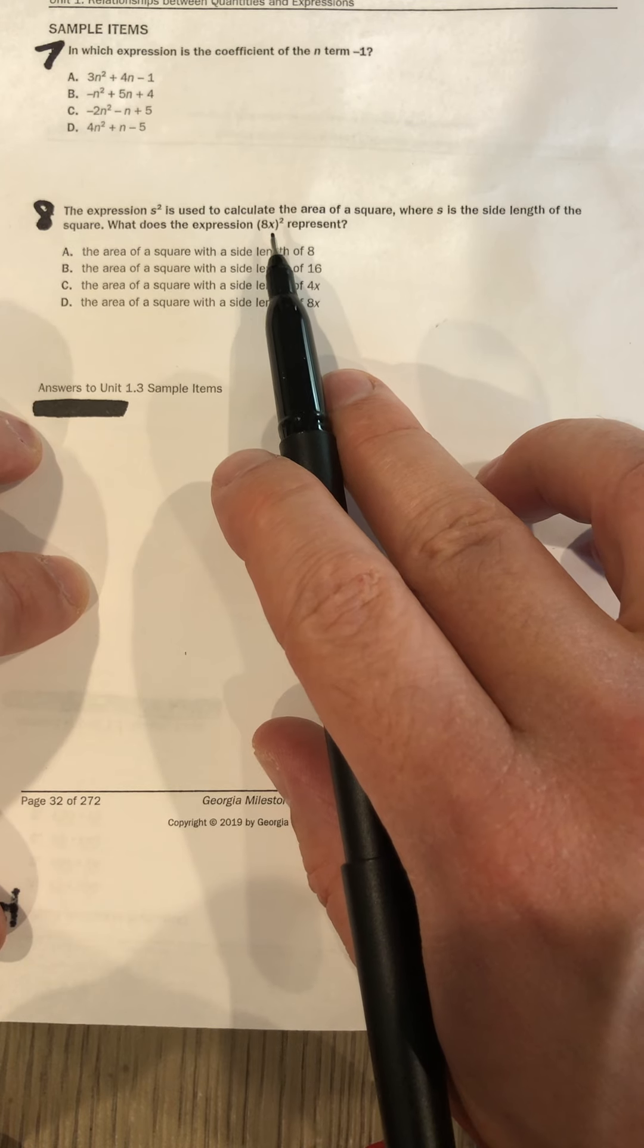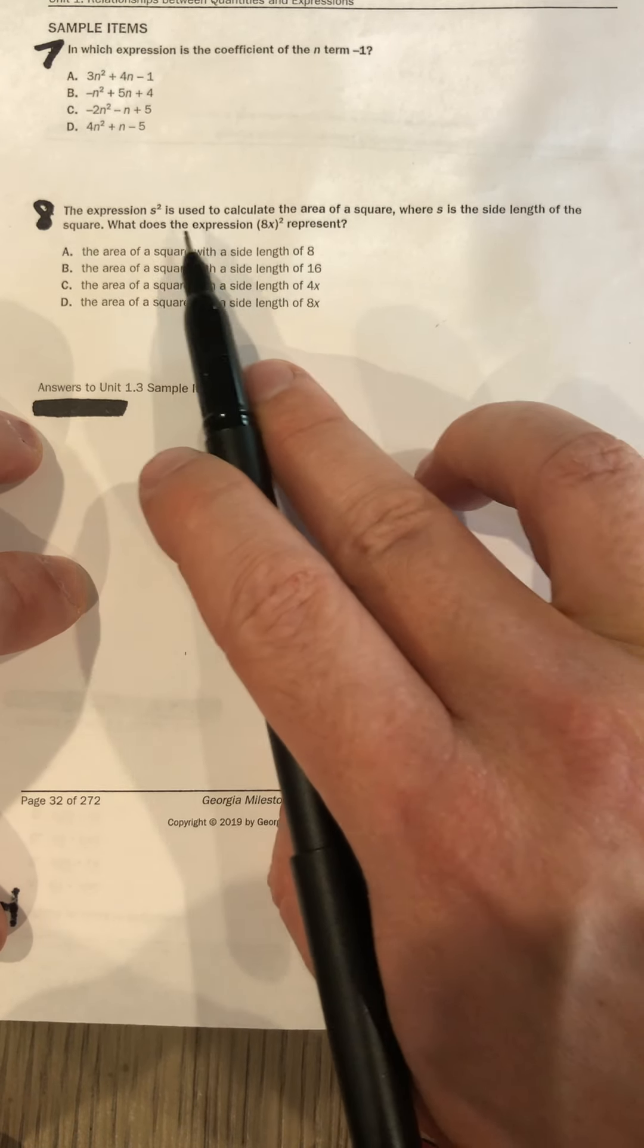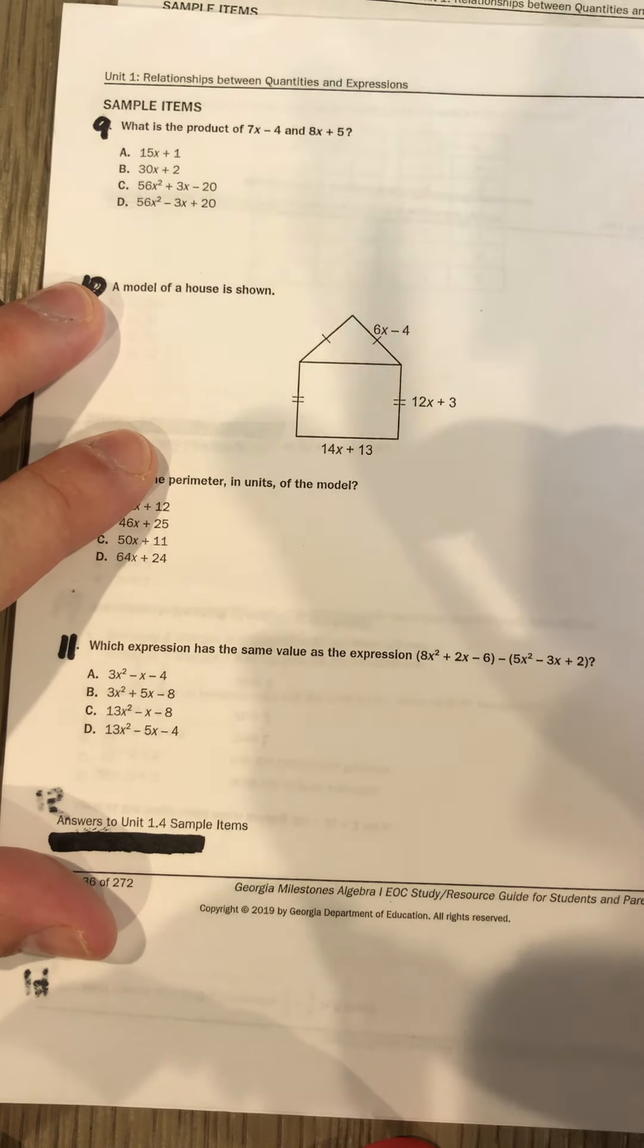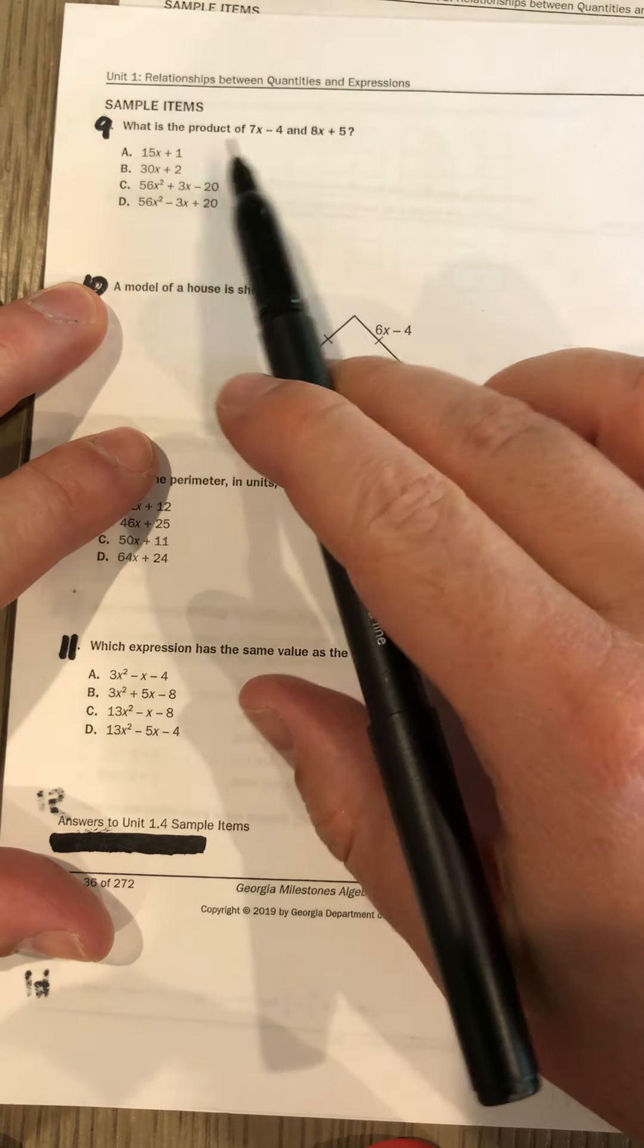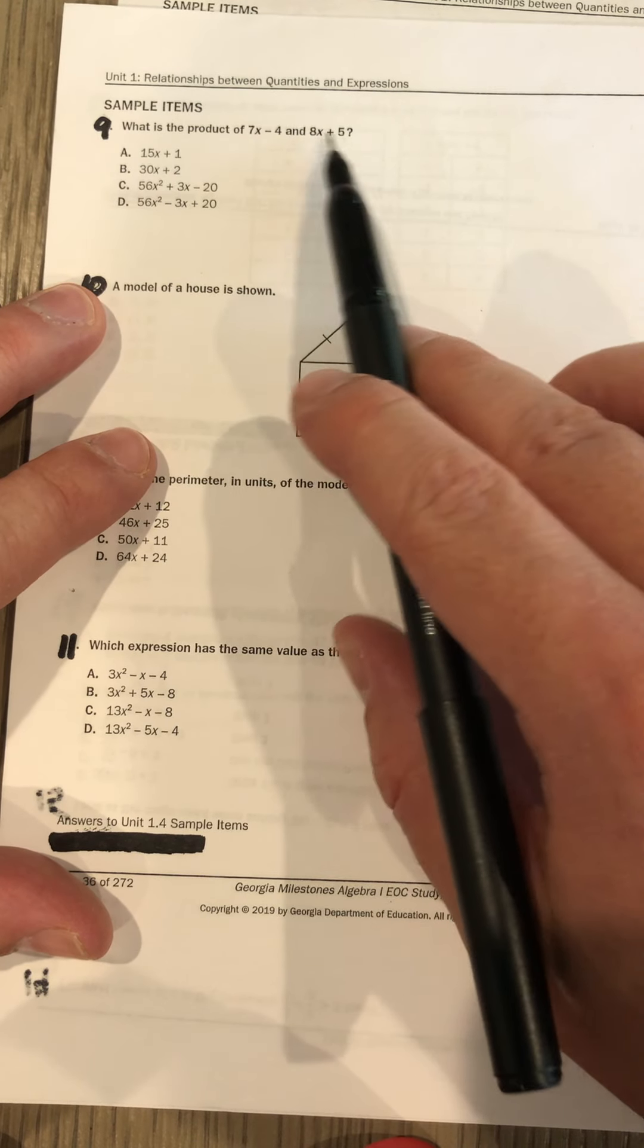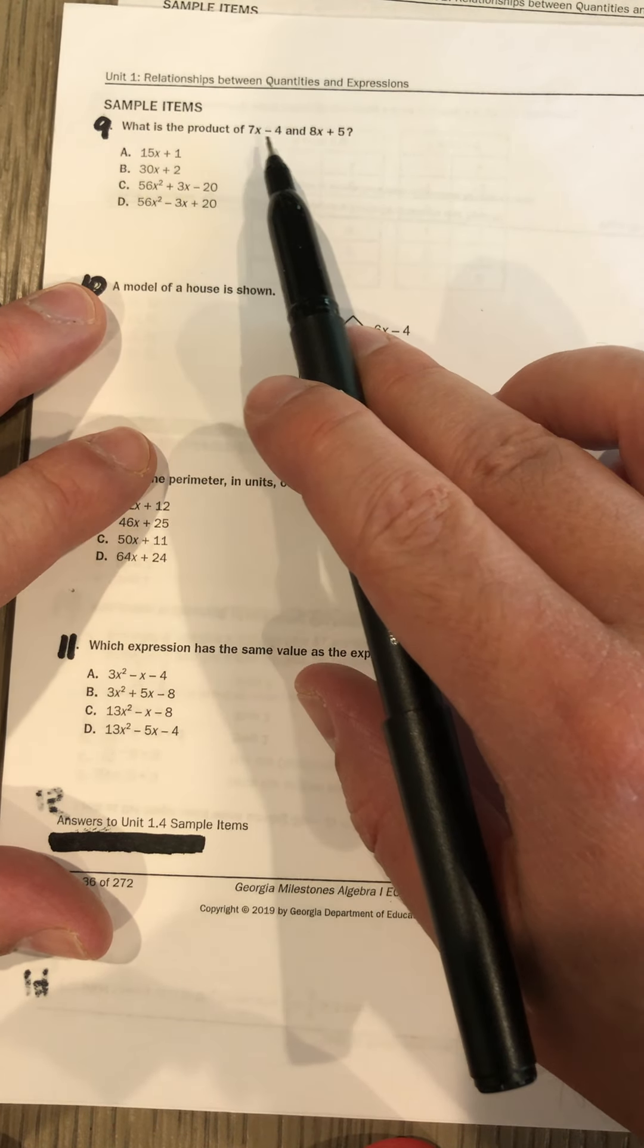Number nine—oh gosh, so easy. What is the product of 7x minus 4 and 8x plus 5? Put parentheses around these two things. Product means multiply. Please FOIL. FOIL.